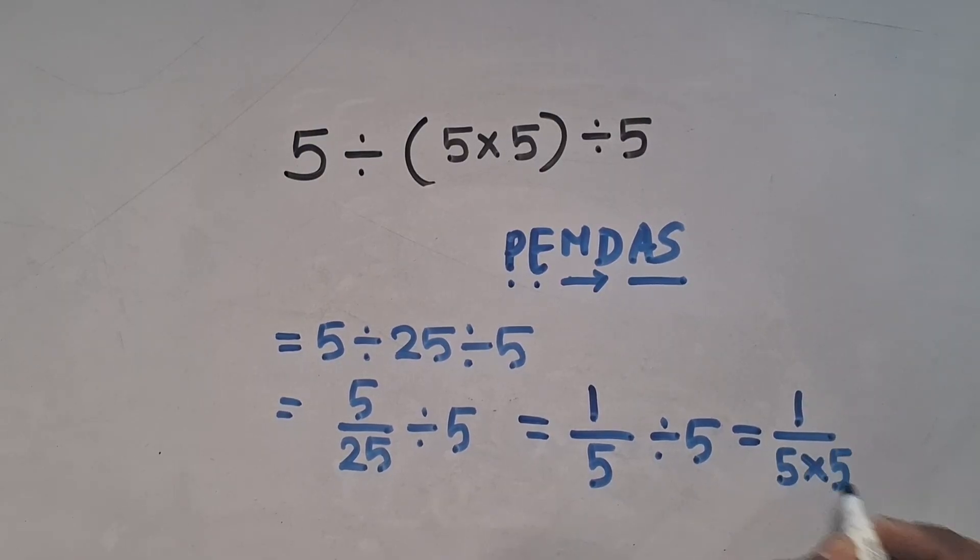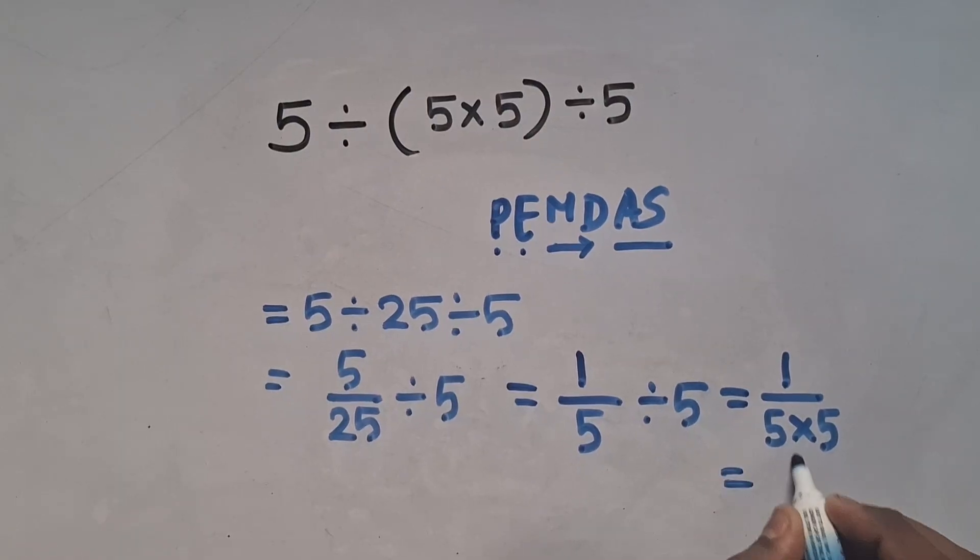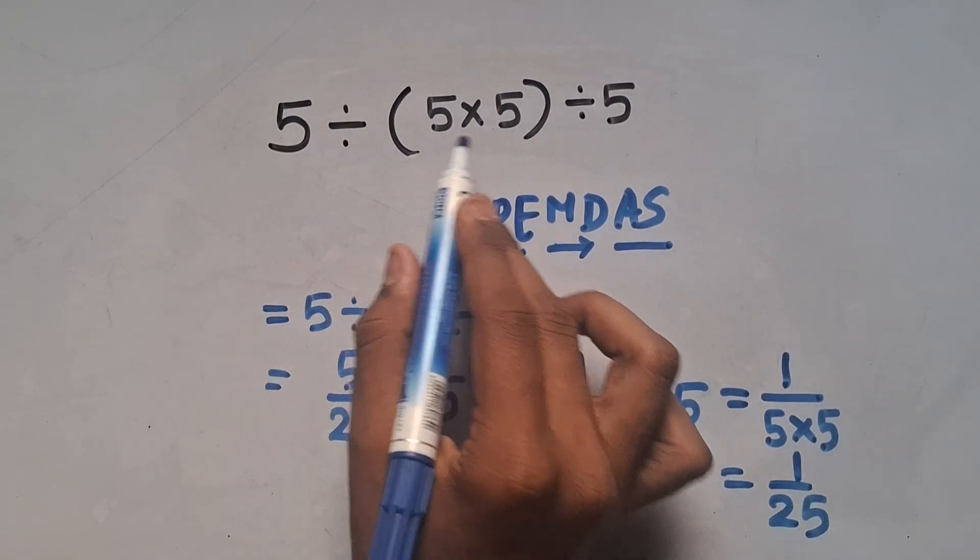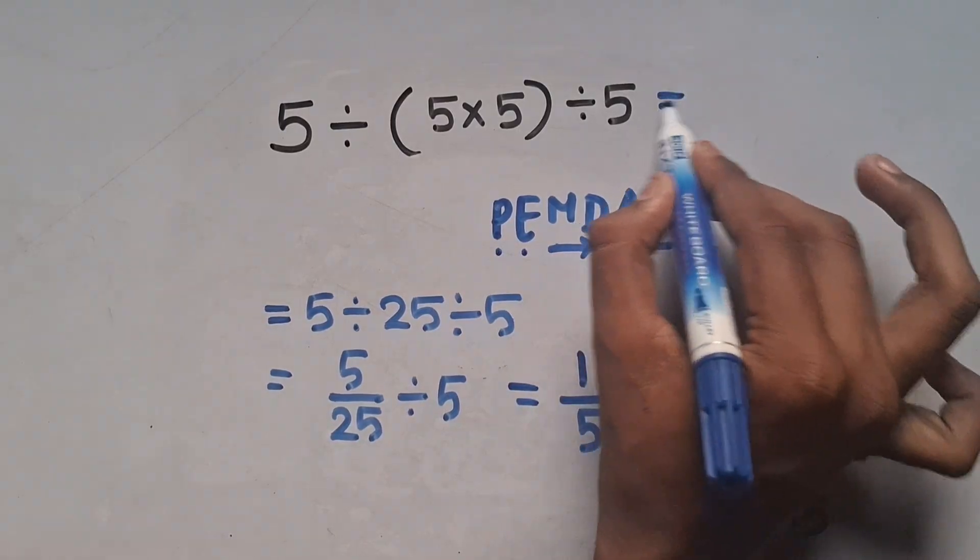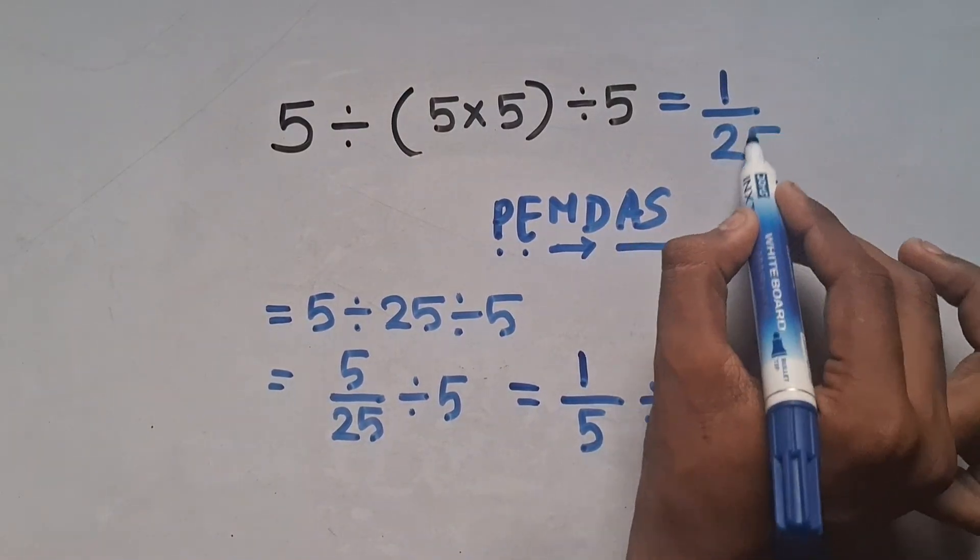This equals 1/25. So the final answer for the expression 5 divided by (5 times 5) divided by 5 is equal to 1/25. Hit like and subscribe to our channel.